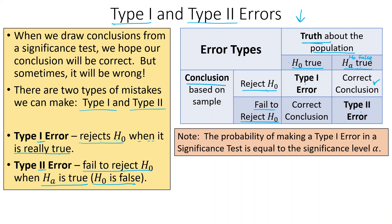Note: the probability of making a Type 1 error in a significance test is exactly equal to the significance level alpha. The way I remember this is that in a Type 1 error, the first hypothesis is true — and the first hypothesis is H0 — so the error would be to reject H0.